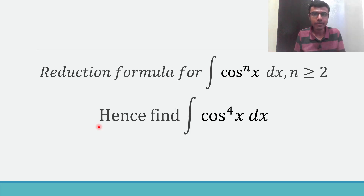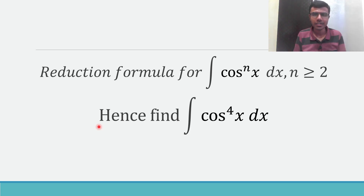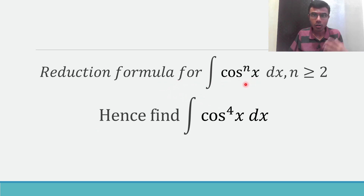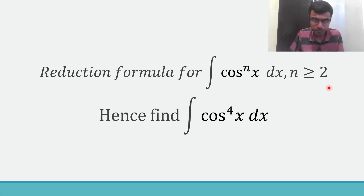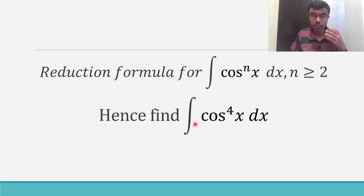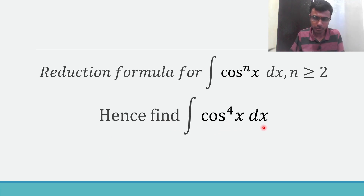Hello learners, this is Akash. I completed my B.Tech from NIT Roorkee in 2020. Currently I'm a mathematics teacher. Now let us see how to solve this given question. Here we need to find out the reduction formula for cos^n x — that is, integral of cos^n x dx — where n is a positive integer greater than or equal to 2. After that, once we get the reduction formula, we need to find out the integral of cos^4 x dx.